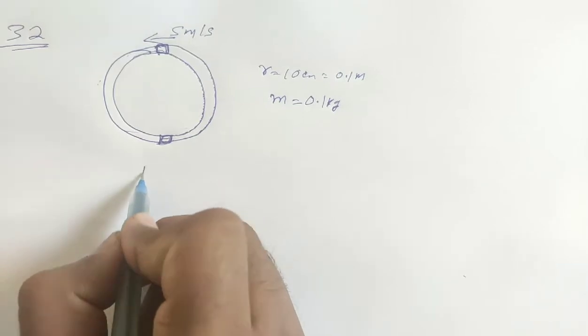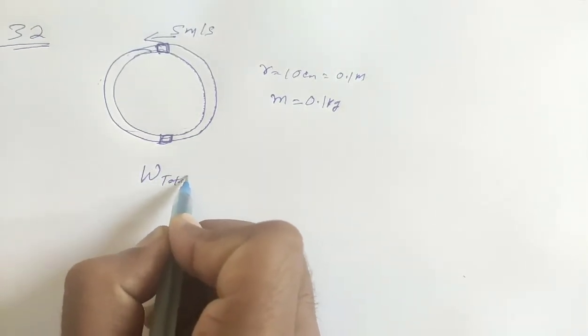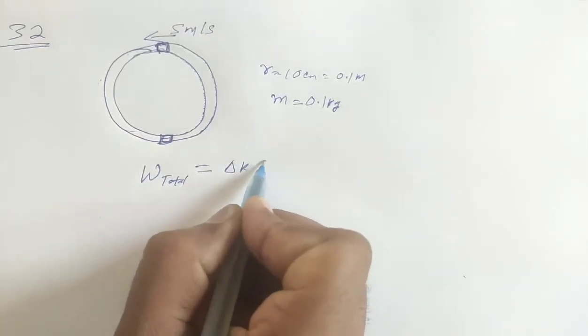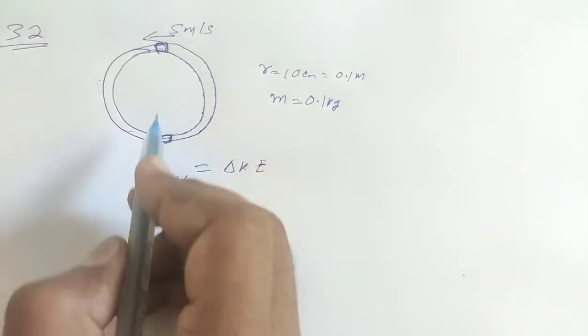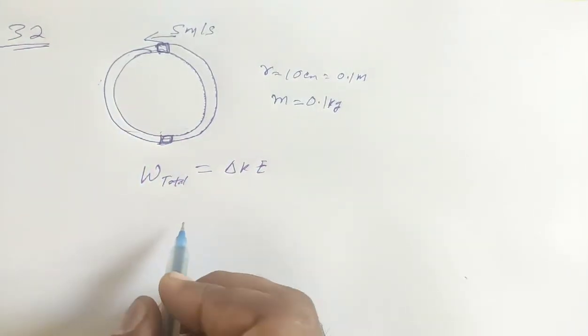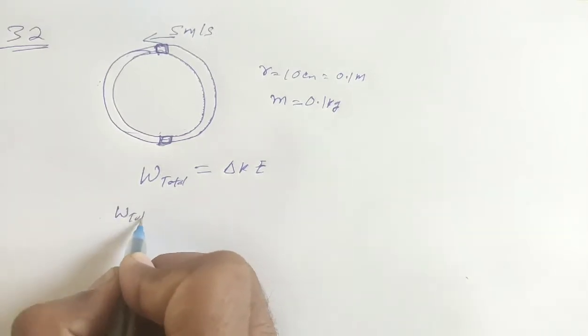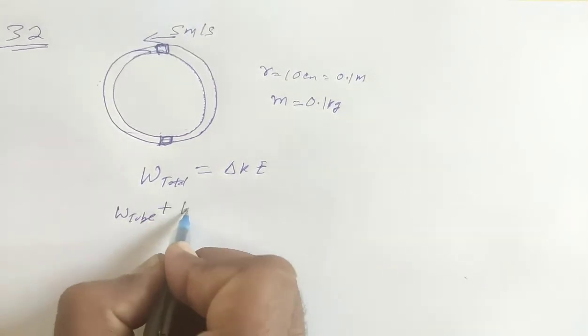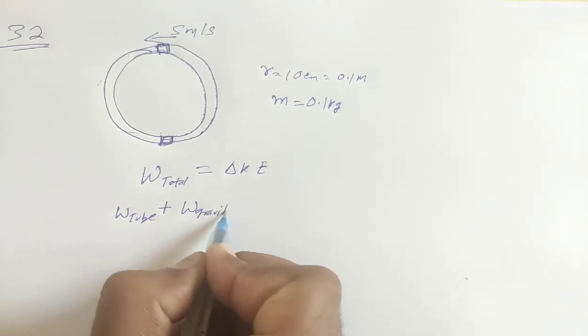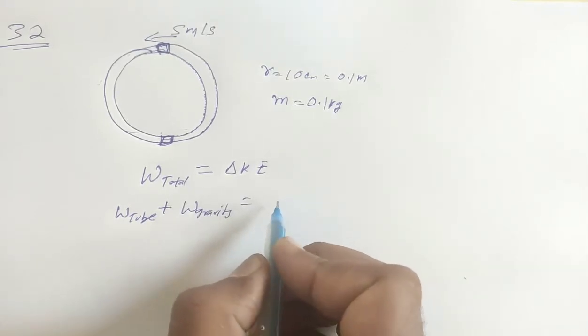We know that total work done is equal to the change in kinetic energy. Total work done equals the change in kinetic energy.